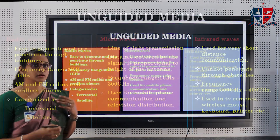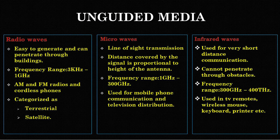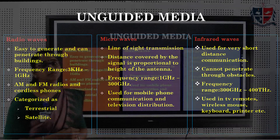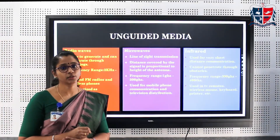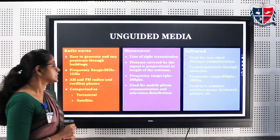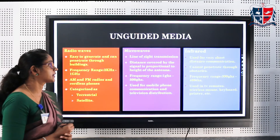In the case of microwaves, line-of-sight transmission is its feature. That is, the distance covered by the signal is proportional to the height of the antenna. The frequency coverage is one gigahertz to 300 gigahertz. It is used for mobile phone communication and television distribution.